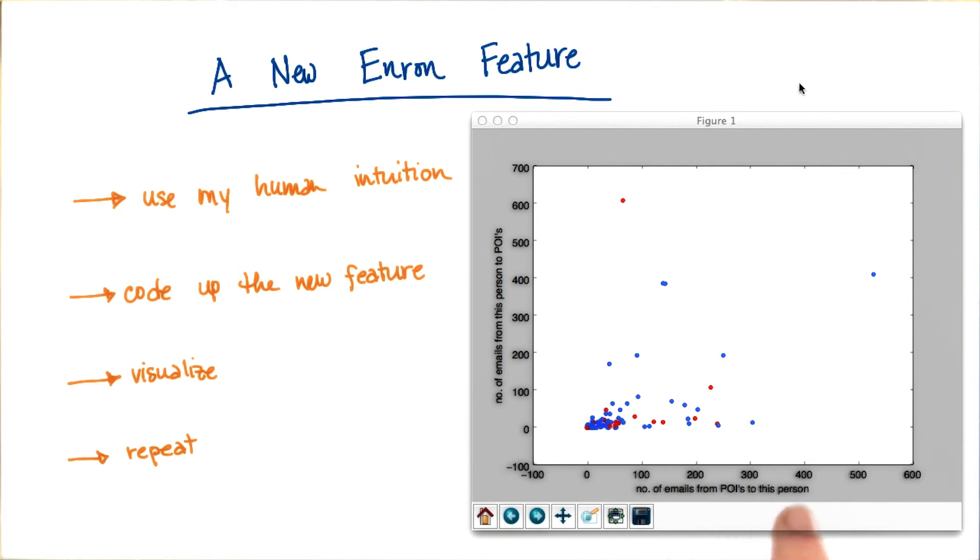In other words, if you get 80% of your emails from persons of interest, my intuition might be that you yourself are one. But of course, I have to actually code up the feature to test this hypothesis.